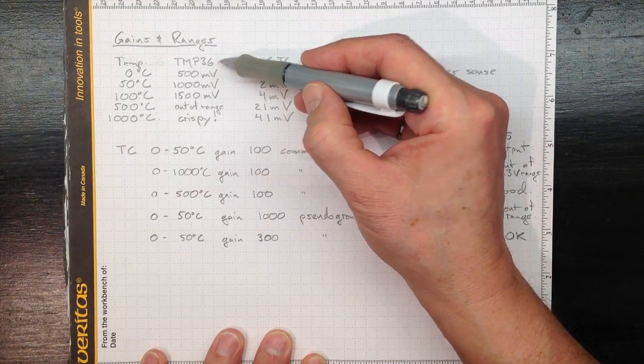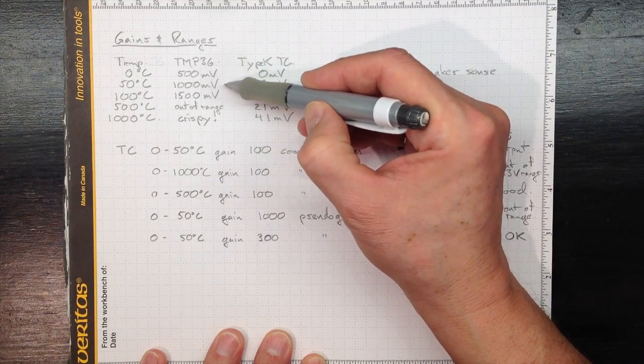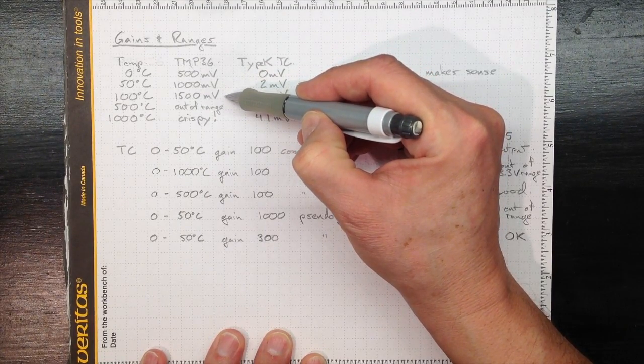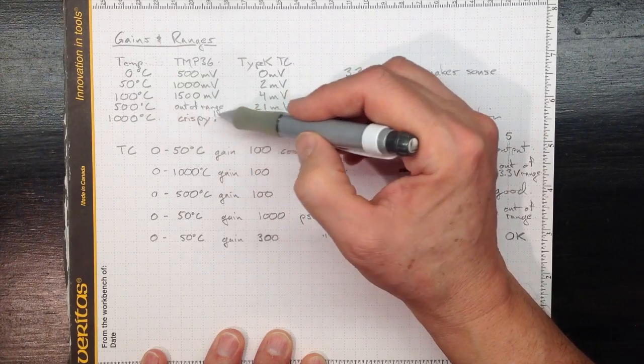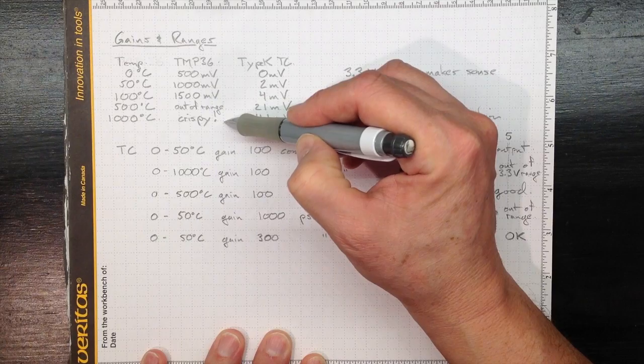The TMP-36 gives us a 500 millivolt output at zero degrees C, 1 volt at 50 degrees and 1500 millivolts at a hundred degrees C. By 500 it's out of range and by a thousand it's quite crispy.